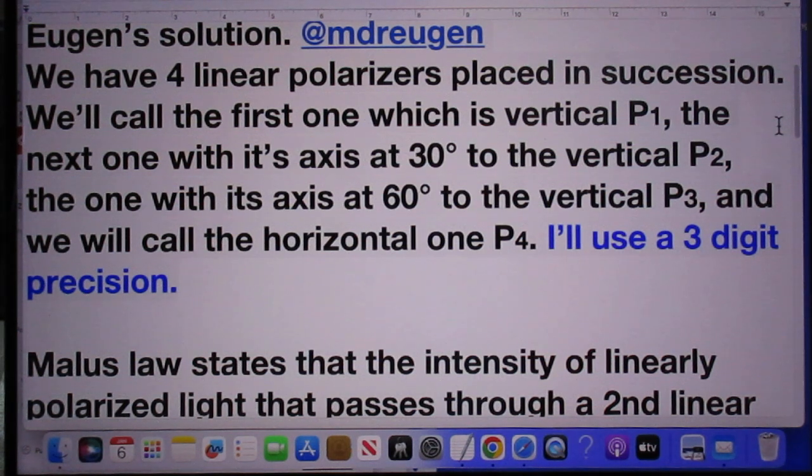The one with its axis at 60 degrees to the vertical we call P3, and we will call the horizontal one P4. He uses a three-digit precision.